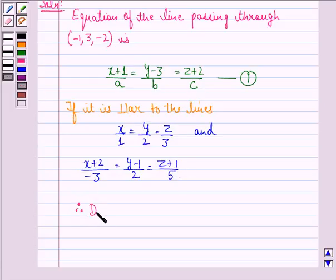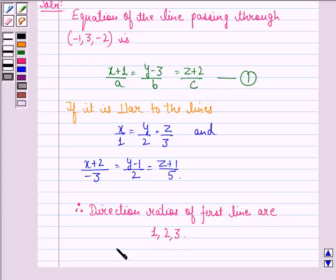direction ratios of first line are 1, 2, 3. Therefore, A plus 2B plus 3C equals to 0 and this we call equation 2.